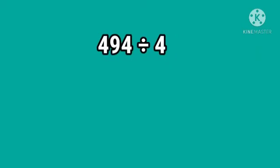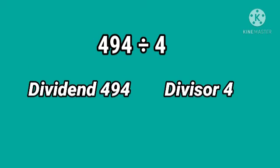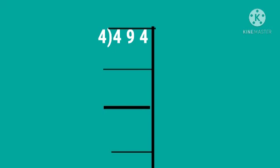494 divided by 4. So, dividend is 494, divisor is 4. Divide the hundreds, tens and units in that order by 4. 4 once are 4. So, 4 can be divided by 4. We write 1 in the hundredth place of the quotient. So, 4 minus 4 is equal to 0.